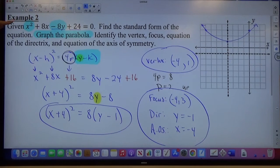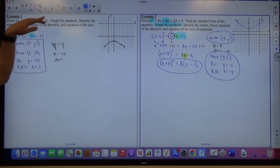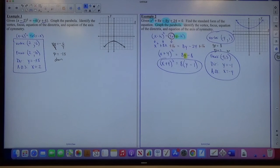So if you start in general form, that's what this is. Make standard form, then you find all your stuff. If you start in standard form, graph it.